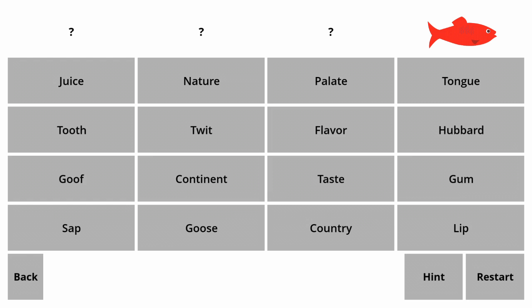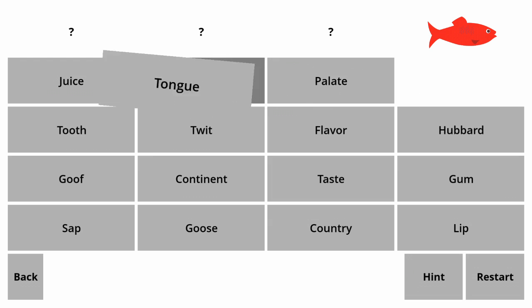The words are: Juice, Tooth, Goof, Sap, Nature, Twit, Continent, Goose, Palate, Flavor, Palate, Taste, Country, Tongue, Hubbard, Gum, and Lip.